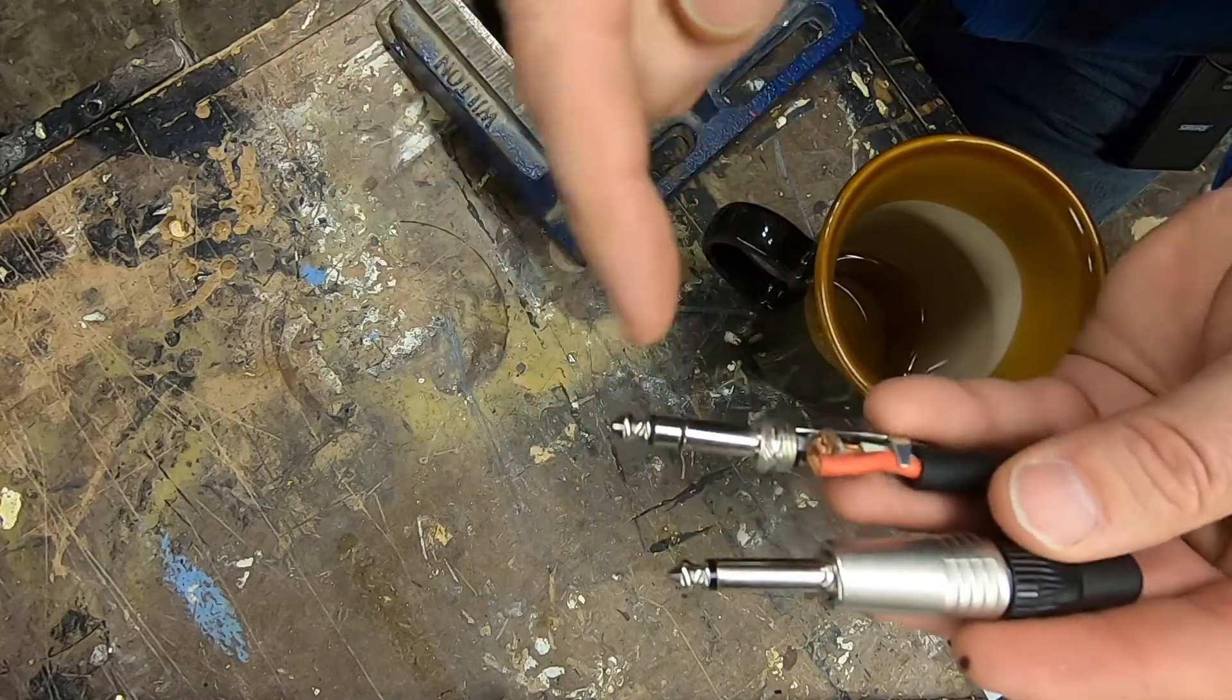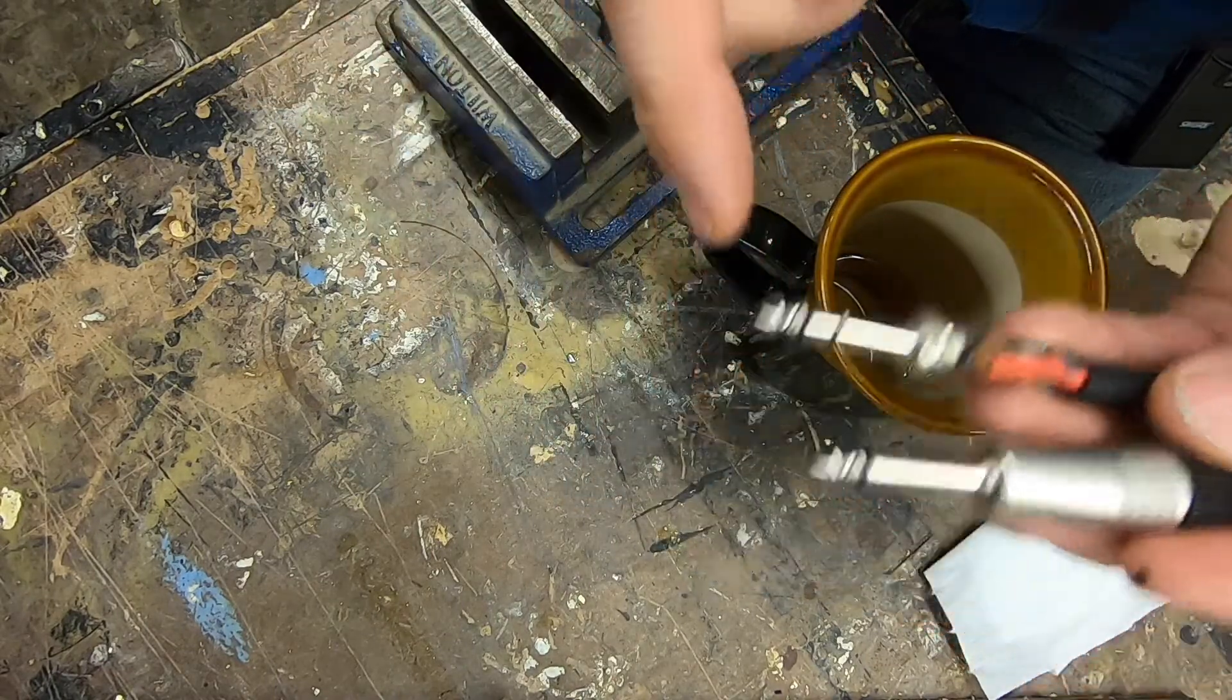This is an unbalanced or a tip and sleeve. This is a balanced tip ring sleeve. So I want to show you just using a couple simple tools and techniques how you can be more confident in soldering and make good mechanical connections.